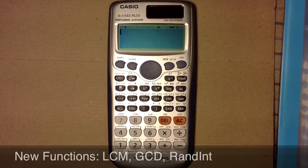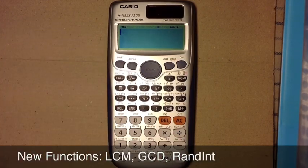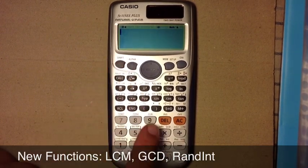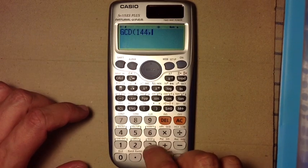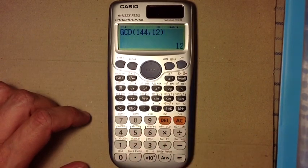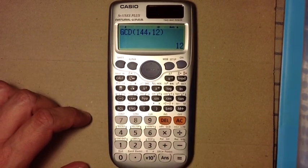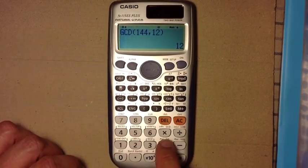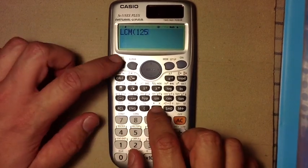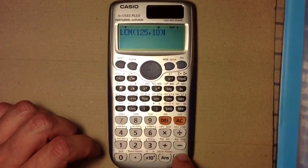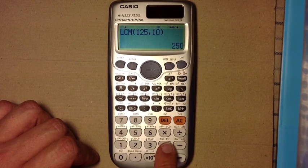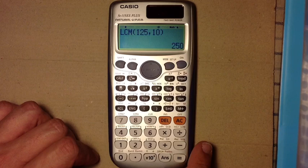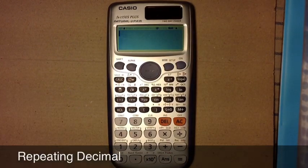Some more features include the GCD, greatest common denominator, which is accessed by alpha, the times key. The least common multiple LCM, which will be accessed by alpha, the division key. You also have the integer function.